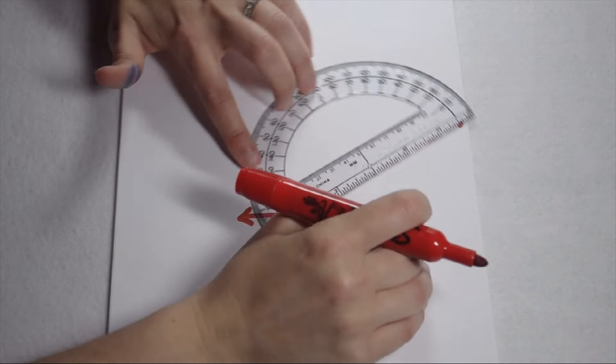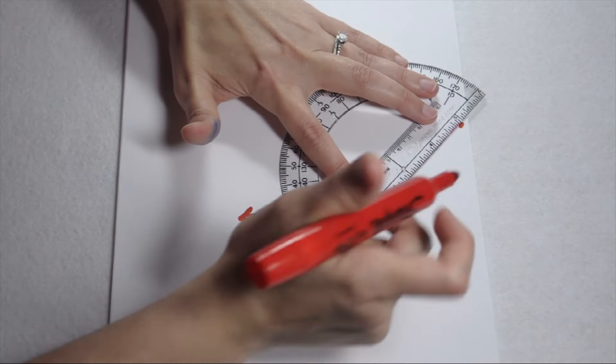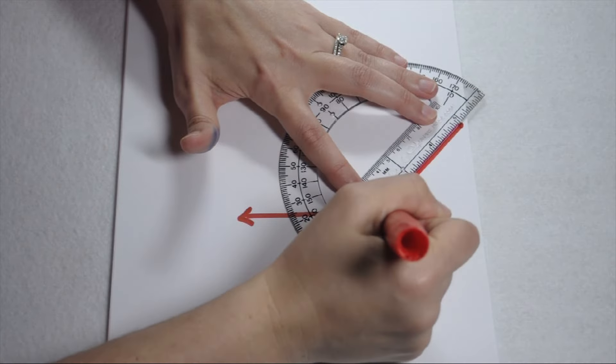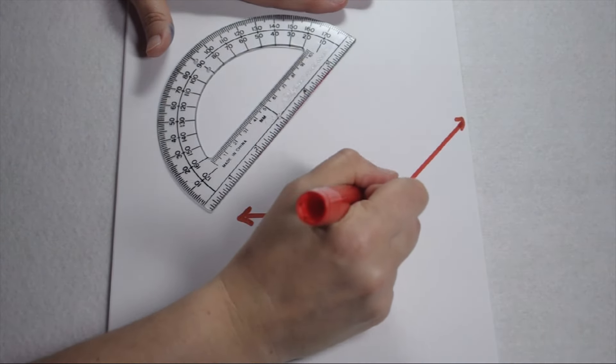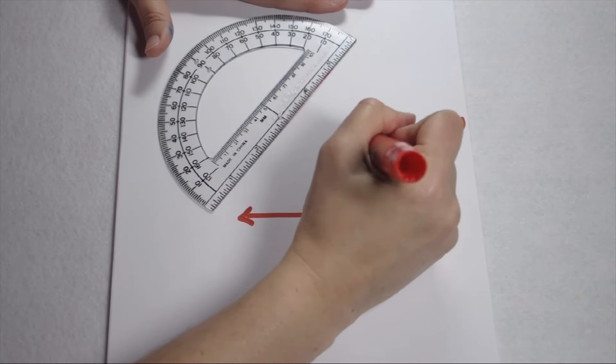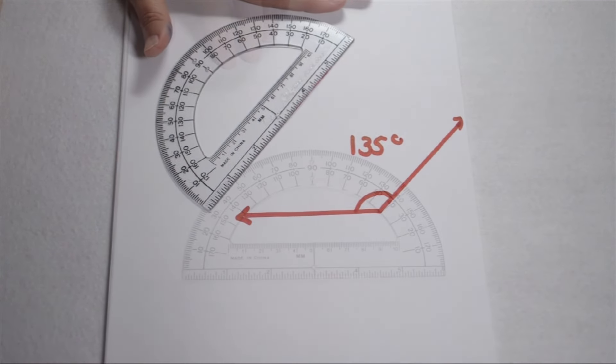I can make my mark there and then use my protractor as a straight edge to connect that back to my vertex. I'm going to label to show the direction that I measured and we now have a 135 degree angle.